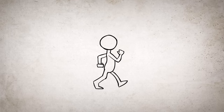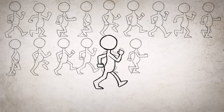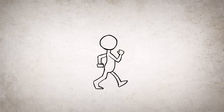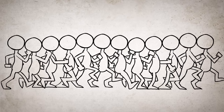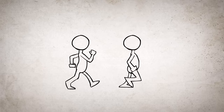Walk cycles can be scary for beginning animators, because it seems like there are so many poses to memorize. But if you break it down into simpler components, it becomes much easier to wrap your head around. So instead of thinking of a walk cycle as 12 different poses to memorize, think of it as two poses. The first pose is called the contact pose, because it is where the foot contacts the ground.